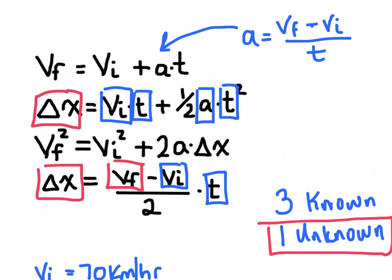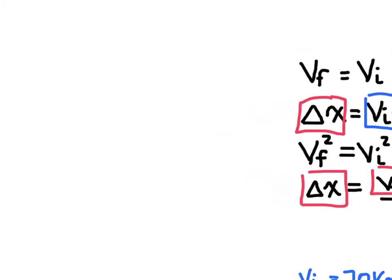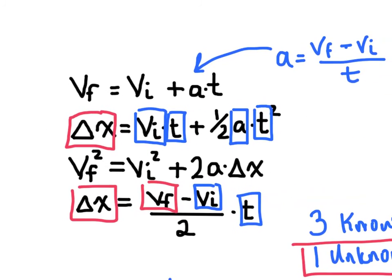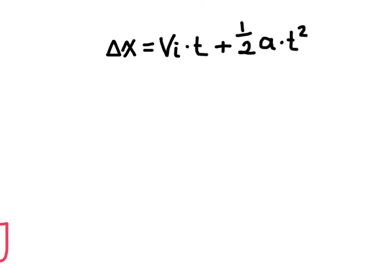Now just keep in mind that there are other ways to write these equations. So for example, if anywhere I see that delta x especially, sometimes you'll see this expanded to x final minus x initial because that is the same thing as delta x. So for example, we could even take this second equation of motion here.